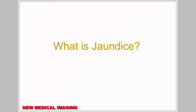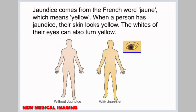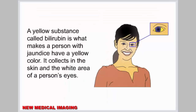What is jaundice? Jaundice comes from the French word 'jaume', which means yellow. When a person has jaundice, their skin looks yellow. The whites of their eyes can also turn yellow. A yellow substance called bilirubin is what makes a person with jaundice have a yellow color. It collects in the skin and the white area of a person's eyes.